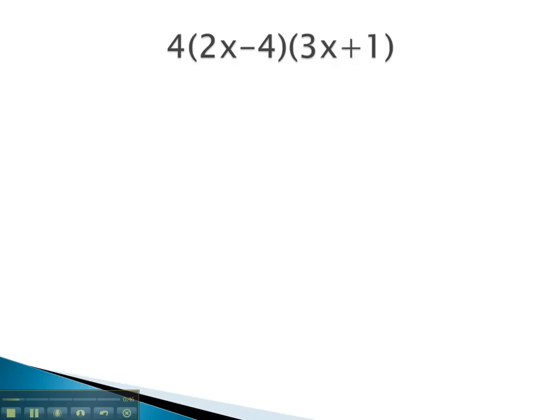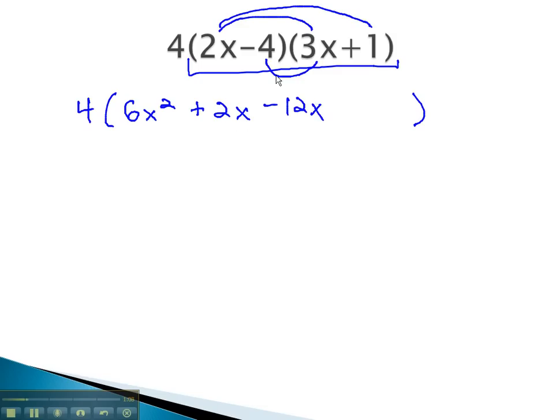We will first multiply out the binomials. We do this, keeping the 4 in front of everything, by foiling. 2x times 3x is 6x squared. 2x times 1 is 2x. Negative 4 times 3x is negative 12x. And negative 4 times 1 is negative 4.